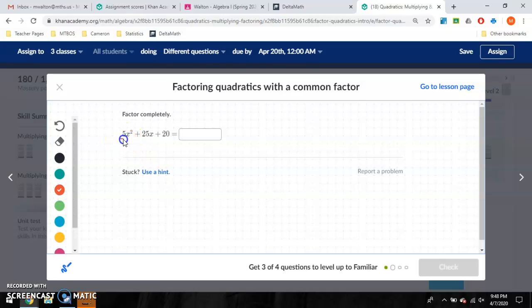Looking at my coefficients, I have a 5, I have a 25, I have a 20. I can't really factor in an x here. I have an x squared, an x, and nothing. But I have 5, 25, and 20. I notice that all of those are divisible by 5. Let's go and factor out a 5 here.